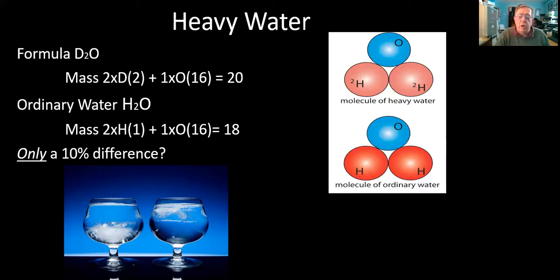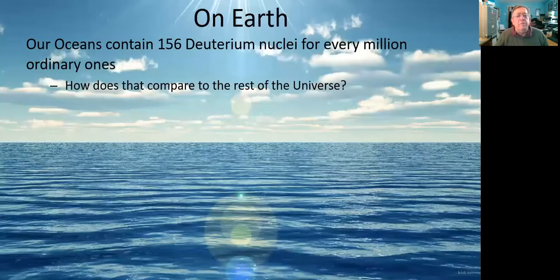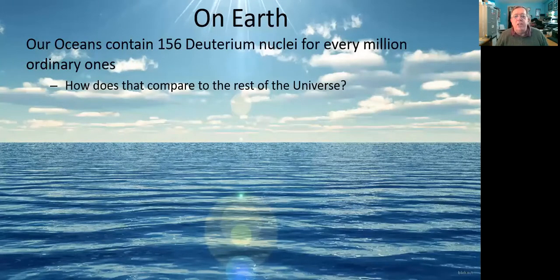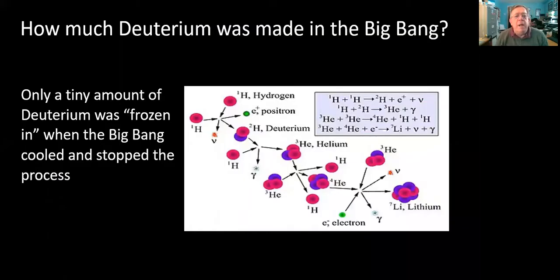But they're not. And in fact, our oceans contain 156 of those deuterium nuclei for every million of the ordinary hydrogens. And it's interesting to compare that with the rest of the universe and with what Fred Hoyle would have predicted from the nuclear synthesis point of view.